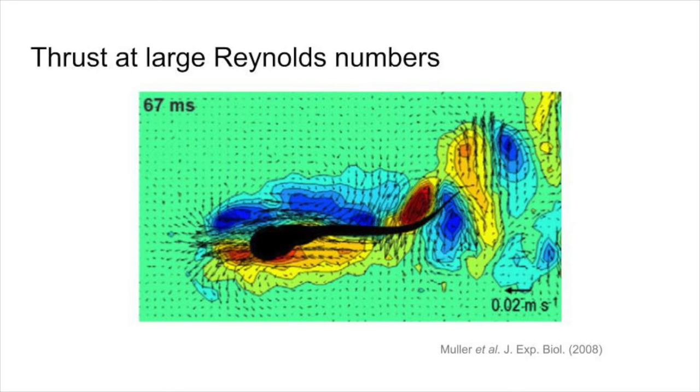As the fluid in the vortex is being displaced, it exerts a force of equal magnitude in the opposite direction of the tail's force, which acts to propel the fish forward through the fluid.